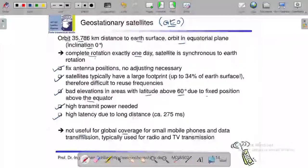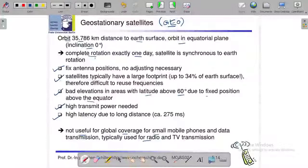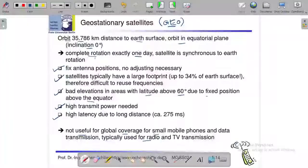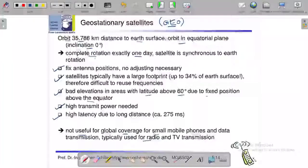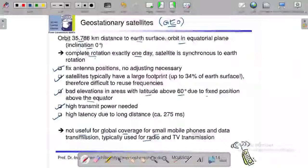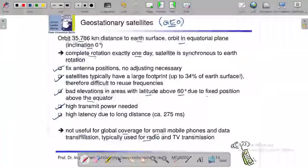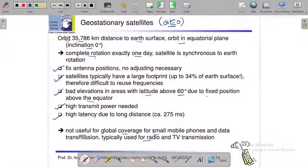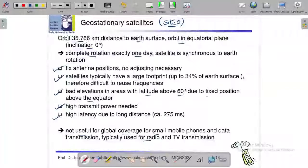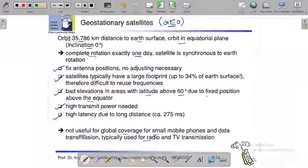It is not useful for global coverage for small mobile phones and data transmission. Typically used for radio and TV transmission. Mobile phone transmission is not, we have to use geostationary satellites. We have little communication like radio communication and TV transmission we have. Geostationary satellites use, okay. That is the reason you don't mobile phone is not a mobile phone because India is communicating with a mobile phone either message or voice, radio transmission, television transmission is in India or Kerala. The range is disadvantage, okay.